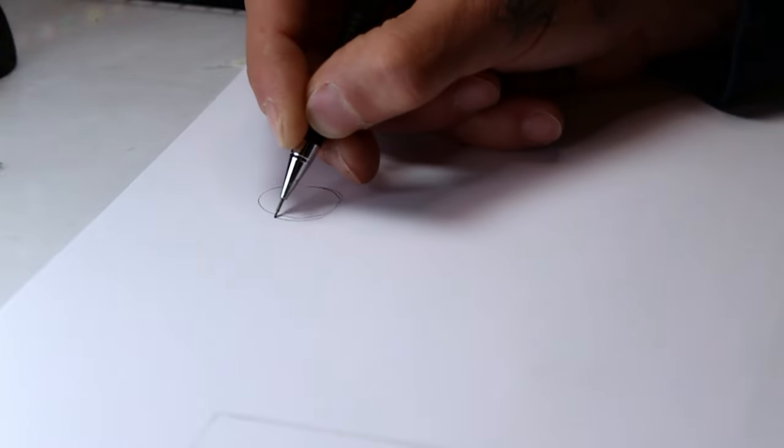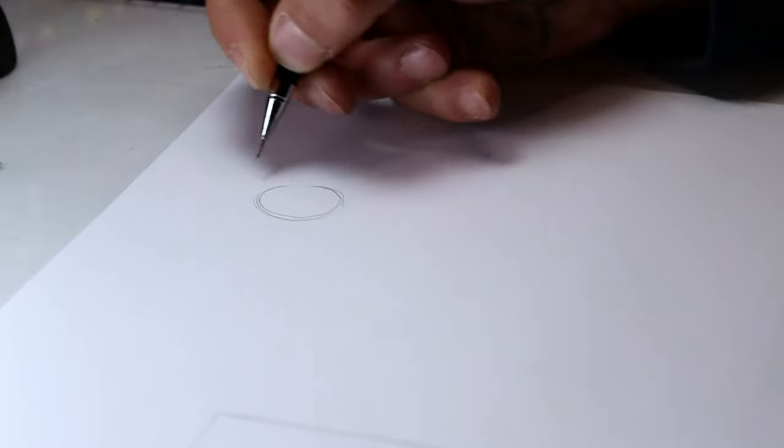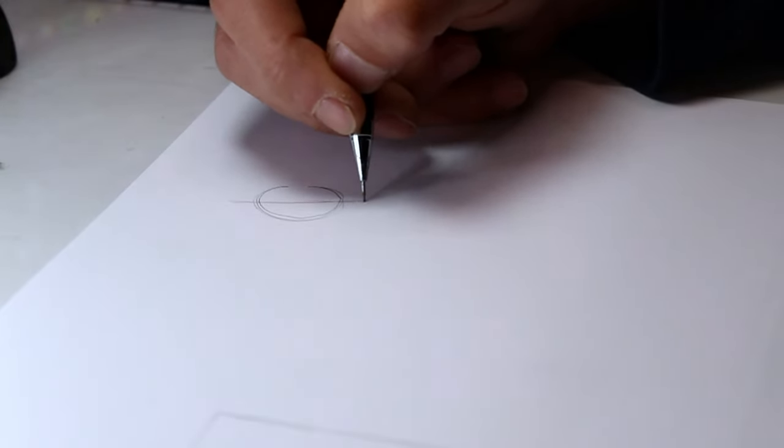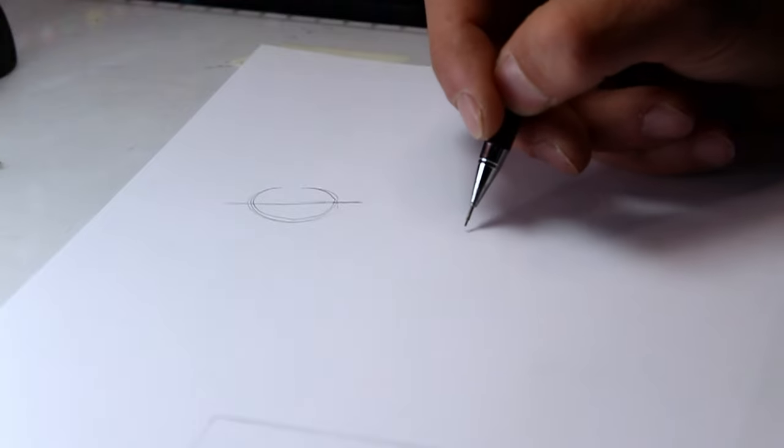I'll start by sketching the wireframe of the C. And as you can see, the center of the C is tilted to the left. This is the guide that you can draw your letter on top.